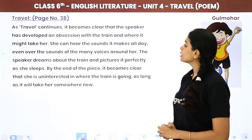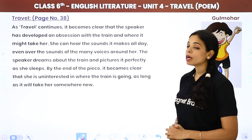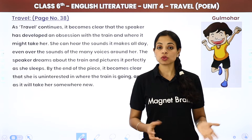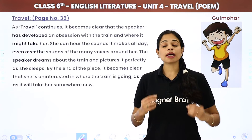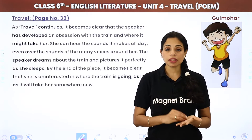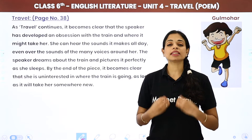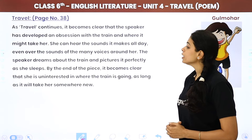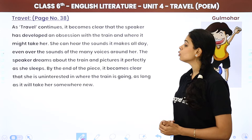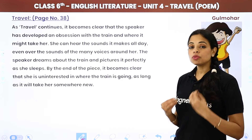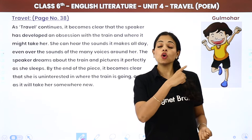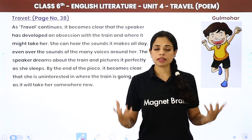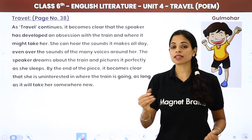As the poem continues, it becomes clear that the speaker has developed an obsession with the train and where it might take her. She can hear its sounds all day, even over the many voices around her. No train is there, yet she clearly hears it — showing the poet has a deep obsession with trains and travel. Even the sounds of what does not exist reach her above all the noise around her.